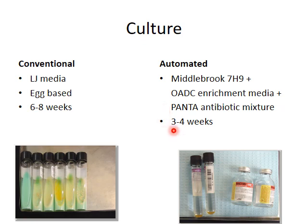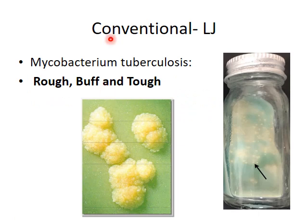The report in automated culture comes in 3 to 4 weeks. You can see the LJ media here and the Middlebrook 7H9 here. The colonies of Mycobacterium tuberculosis on LJ media are described as rough, buff, and tough, as you can see here. The conventional method takes approximately 6 to 8 weeks because of the slow-growing nature of the tubercle bacilli.